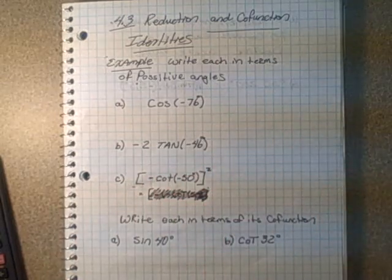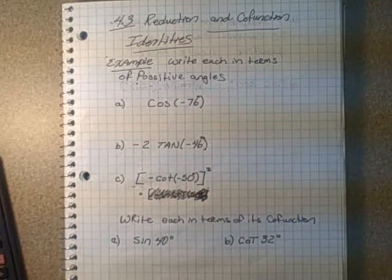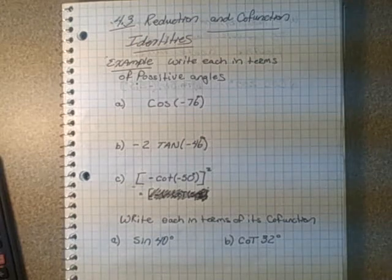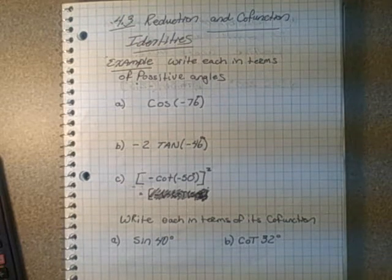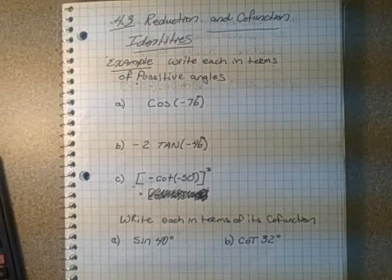This is section 4.3, Reduction and Co-function Identities. This is Math C30, the tutorial for that. We're going to look at using the reduction identities and the co-function identities.